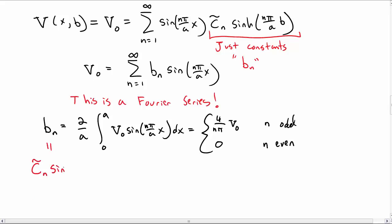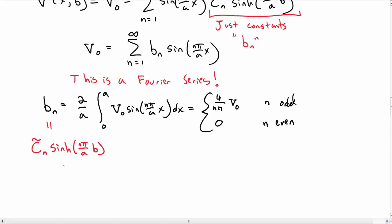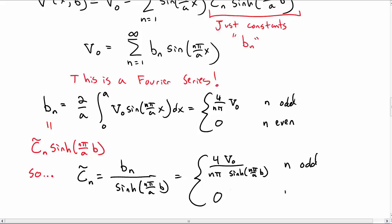But recall b_n, this thing we called b_n, is really C_n twiddle times sinh(n pi over a b). So then we can solve for the C_n twiddle, which is really what we're after. So C_n twiddle is b_n over sinh(n pi over a b), or rather for n odd it's 4 V_0 over n pi sinh(n pi over a b), and zero if n is even.